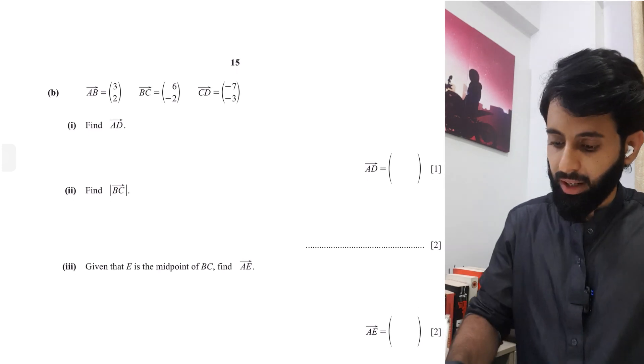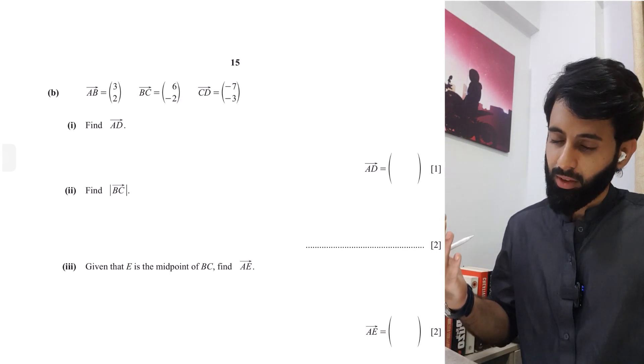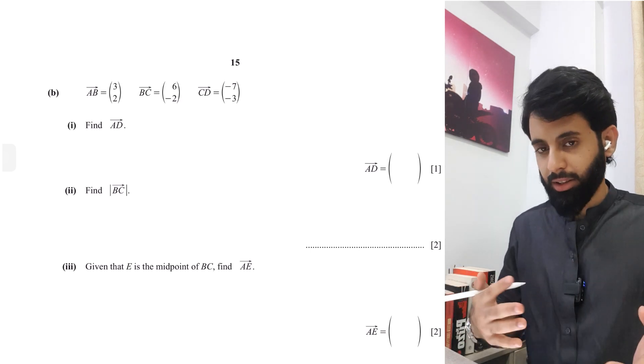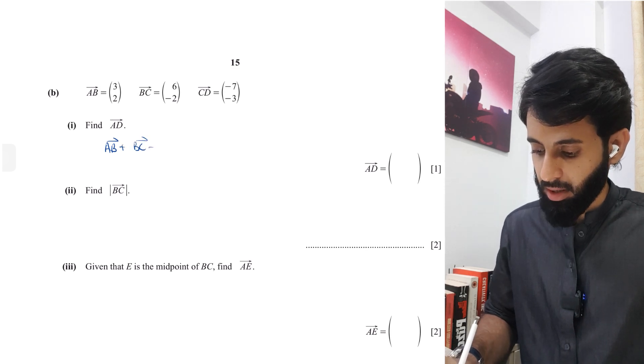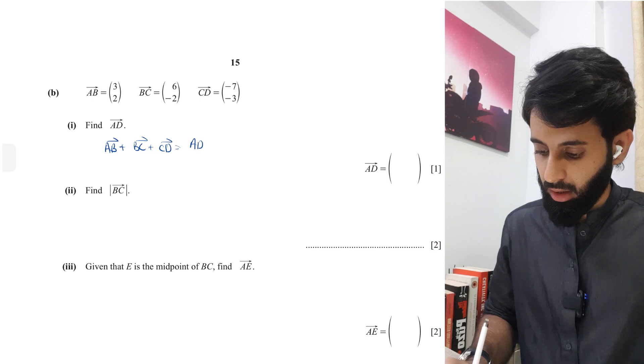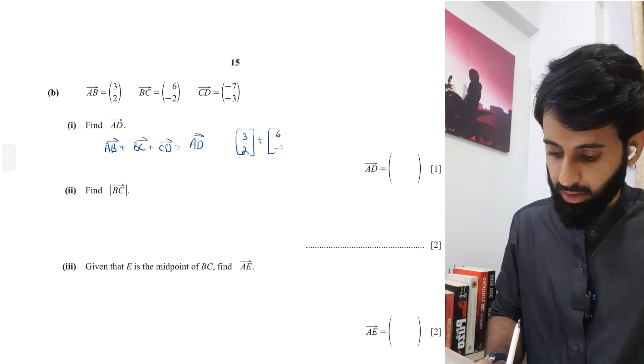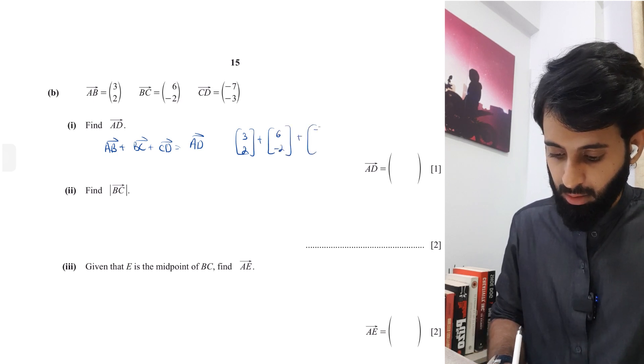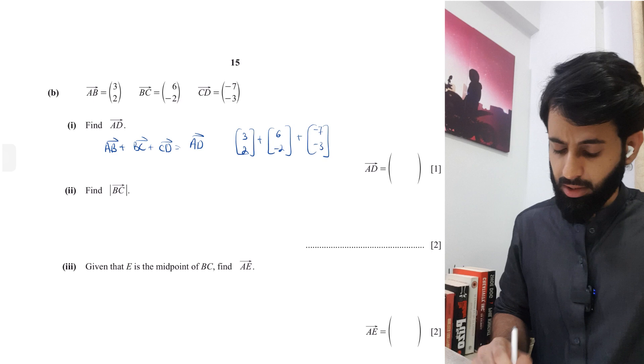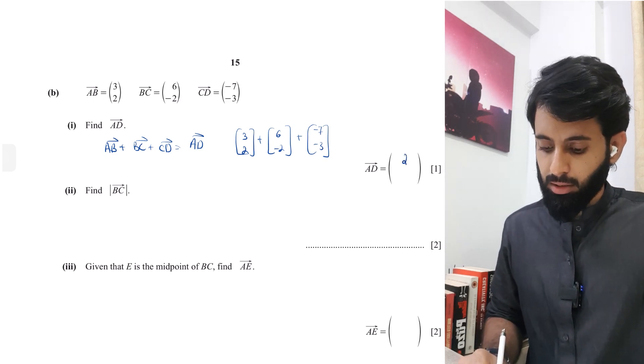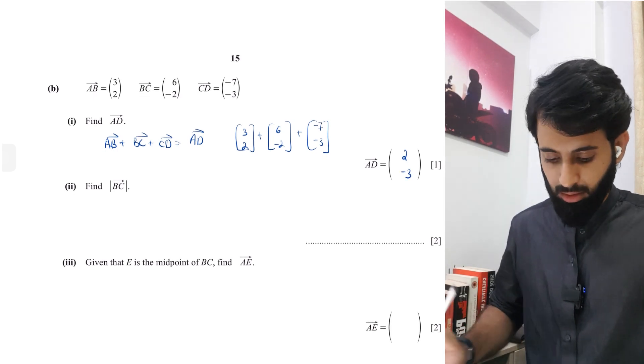So it says find AD. Now what do you have? You have AB, you have BC, you have CD, and you got to find AD. So you got to come up with a rule through which maybe by adding the vectors or subtracting them, you end up with AD. So what I can think of is AB plus BC plus CD will give you AD. So I'm going to add the three vectors: 3 by 2 and 6 minus 2 plus minus 7 and minus 3. So three plus six is nine, nine plus minus seven is two. Minus two plus minus two is zero, and zero plus minus three is minus three. So you have AD.